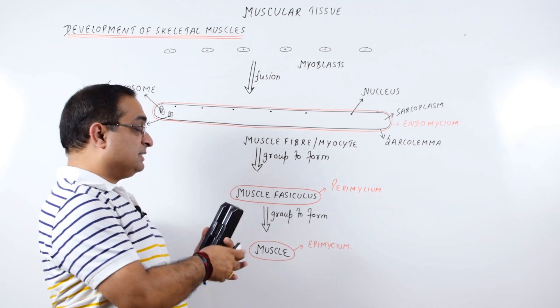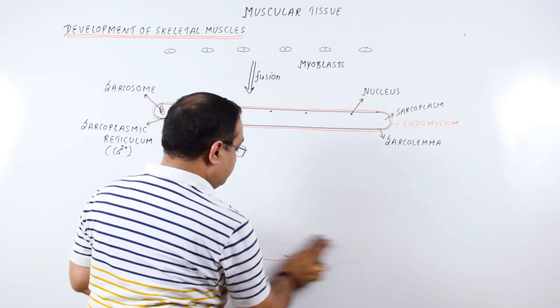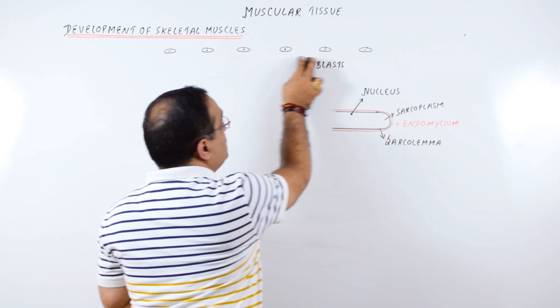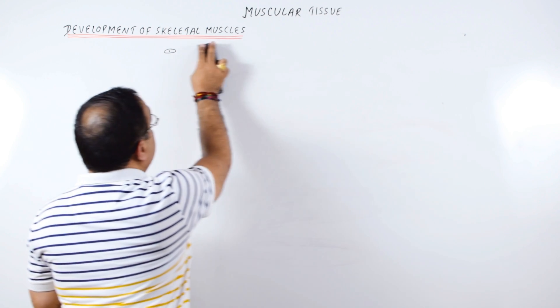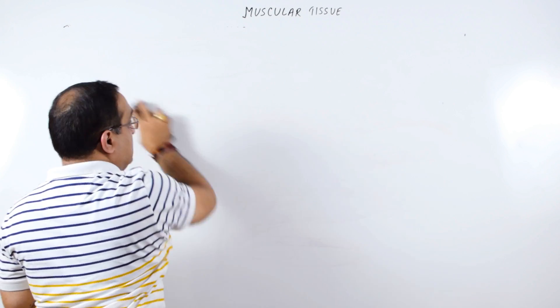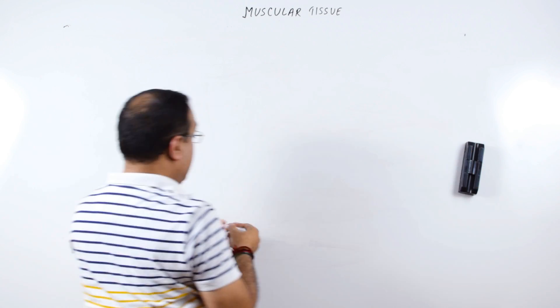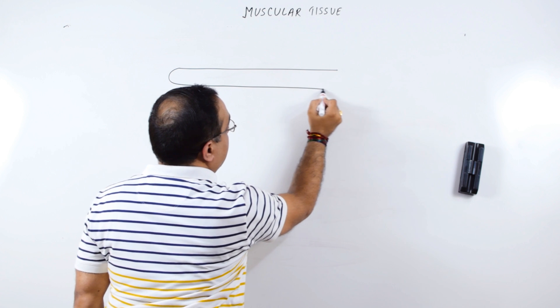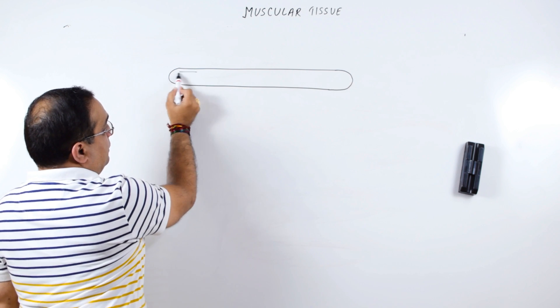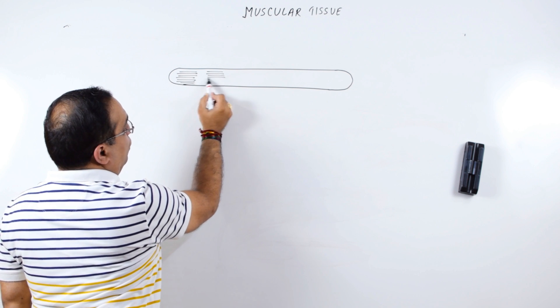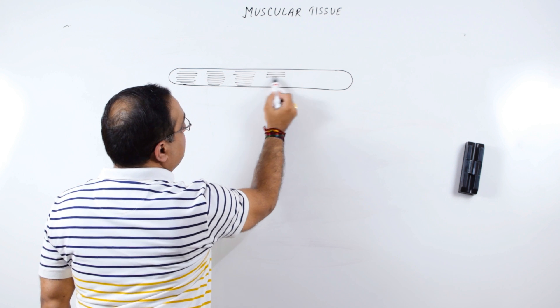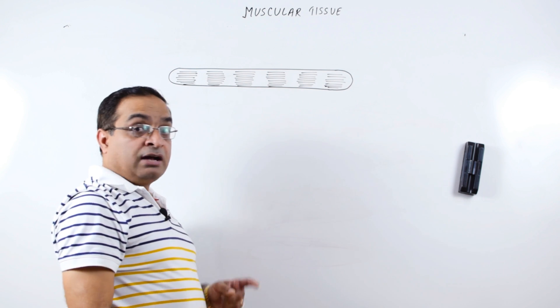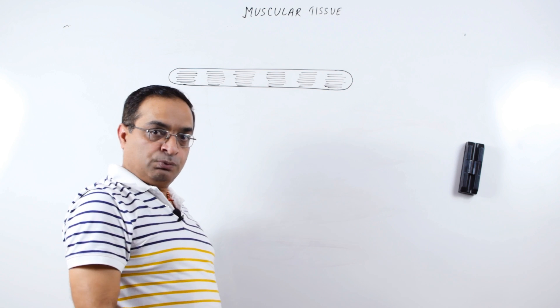Now the question is why the skeletal muscle fibers are called striated muscle fibers. As I told you, the striations are because of myofilaments, the myosin and actin filaments which are arranged in such a manner that they give the appearance of light and dark bands. When you observe them under simple microscope, the skeletal muscle fibers show alternate light and dark bands. These light and dark bands are formed due to arrangement of myofilaments which we will discuss shortly.